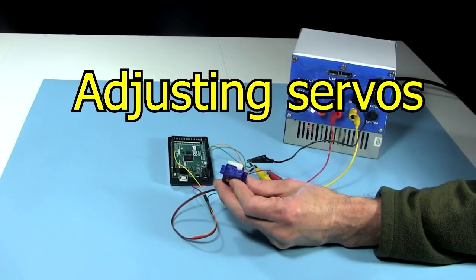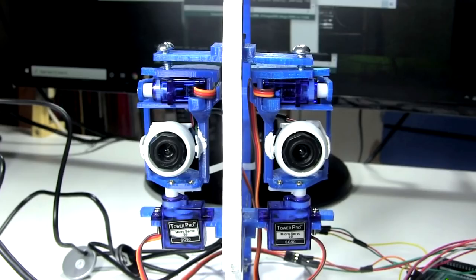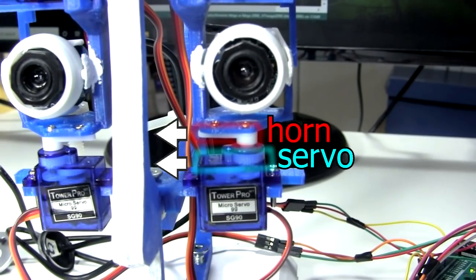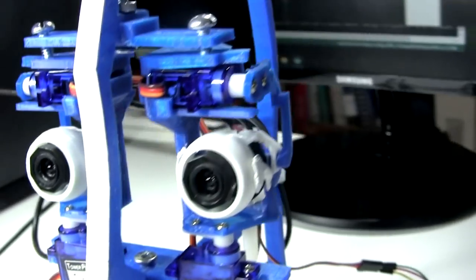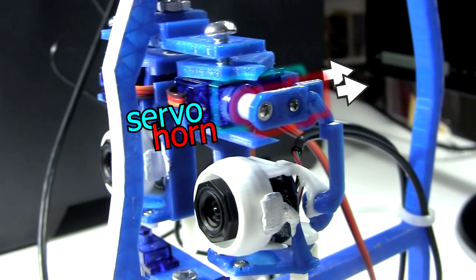Next came a little servo adjusting. Notice that when the eyes are parallel, and looking straight ahead, both the horns for both servo motors are pointing straight back over the servo cases. That's the center of their movement.